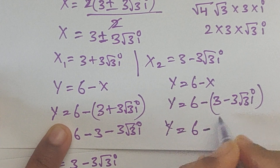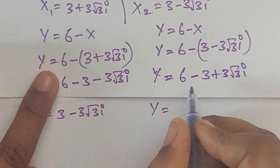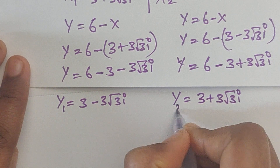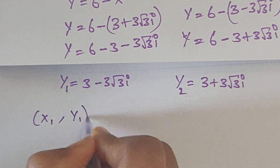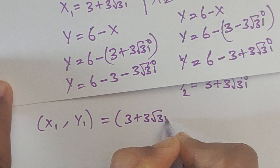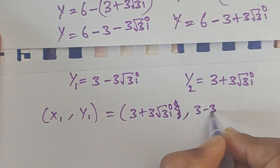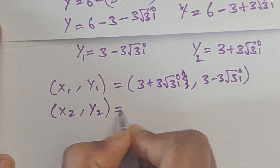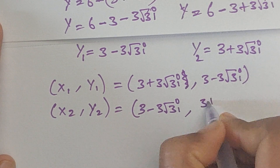So we have our solution pairs. x1, y1 equals (3 plus 3 square root of 3i, 3 minus 3 square root of 3i). x2, y2 equals (3 minus 3 square root of 3i, 3 plus 3 square root of 3i).